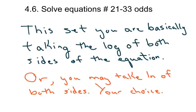This video includes the same page that we've been working on, page 313, and it's 21 through 33 odds. It's pretty easy. All you're doing is taking the log of both sides — it's practice. Or you can take the LN of both sides, natural log. It doesn't matter, your choice.